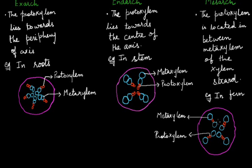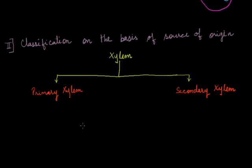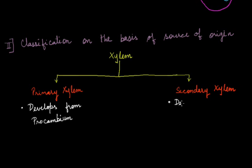Xylem can also be classified on the basis of source of origin into primary xylem and secondary xylem. Primary xylem originates from the pro-cambium, whereas secondary xylem develops from the vascular cambium. This covers all about xylem elements — the conducting tissue which conducts water and minerals from the roots to the upper parts of the plant, including leaves and branches.